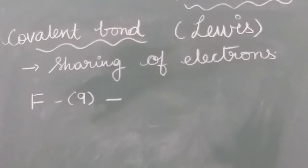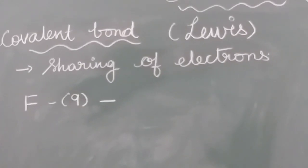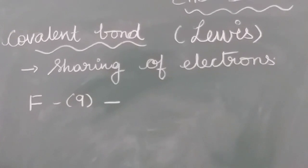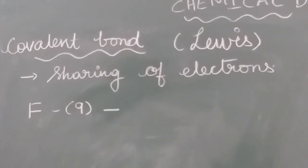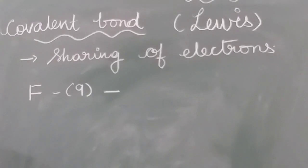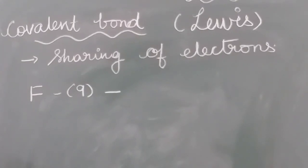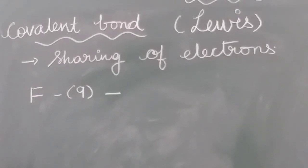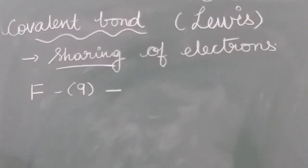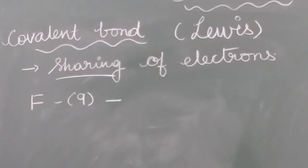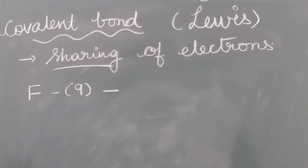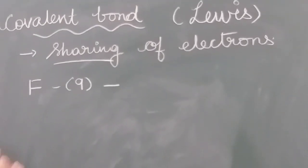After ionic bond, we are going to learn about covalent bond. Covalent bond is explained by Lewis. Ionic bond is formed due to transfer of electrons, whereas covalent bond is formed due to sharing of electrons. Let it be explained with one example.